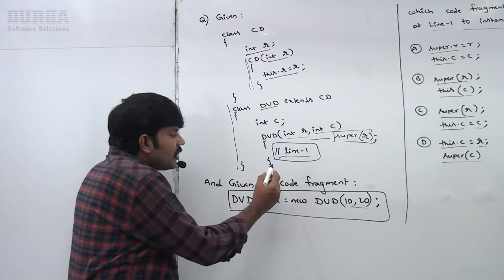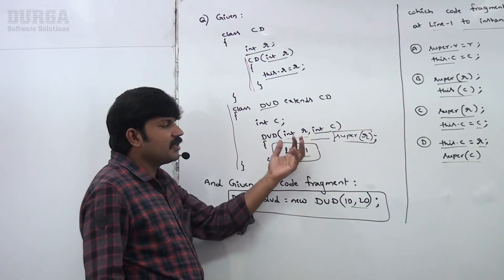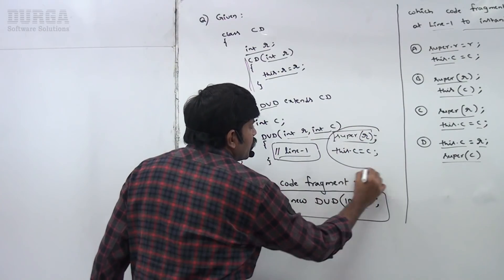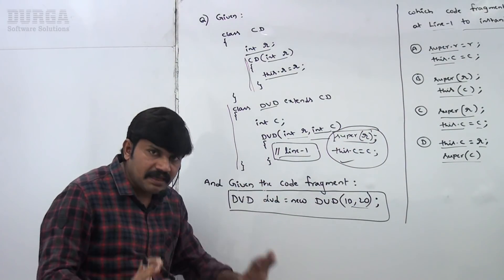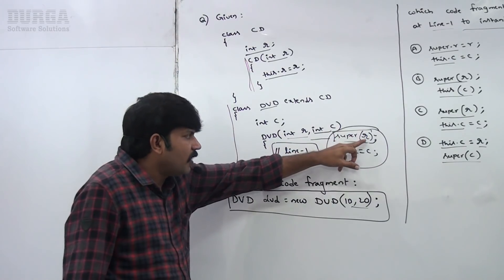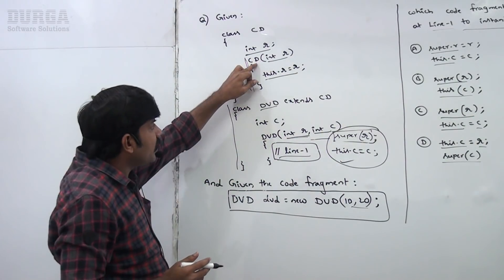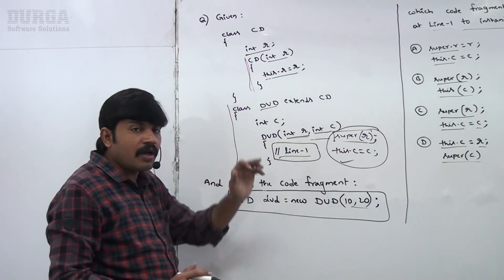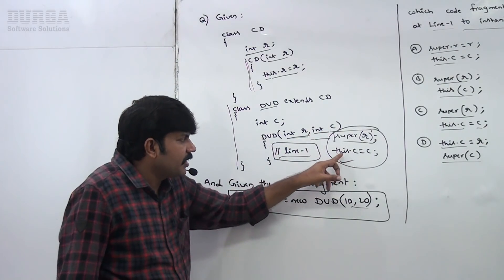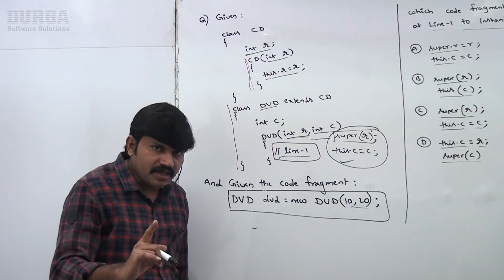After calling super(R), the remaining variable is C. Now I have to perform initialization only for C. So this.C = C. If you take these two lines — super(R) and this.C = C — then perfectly this code is going to work. The code compiles fine and we are not getting any error. If I execute this code, it runs fine with no error, because syntactically everything is correct.